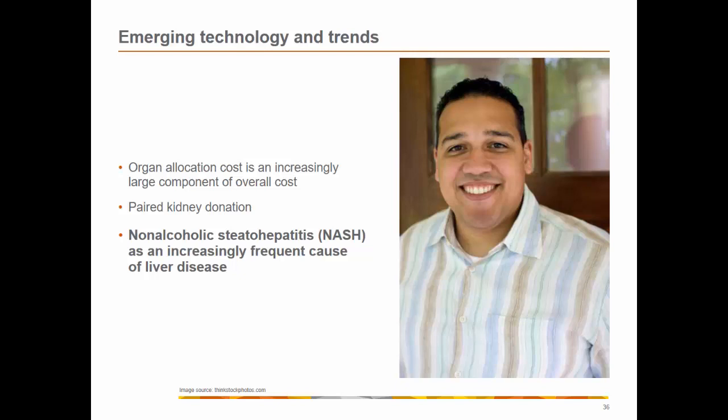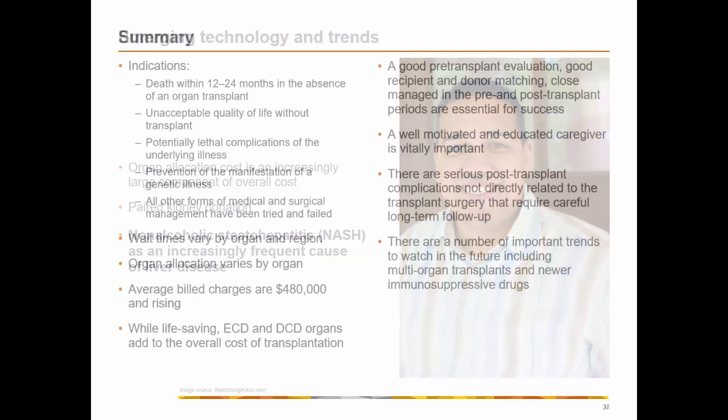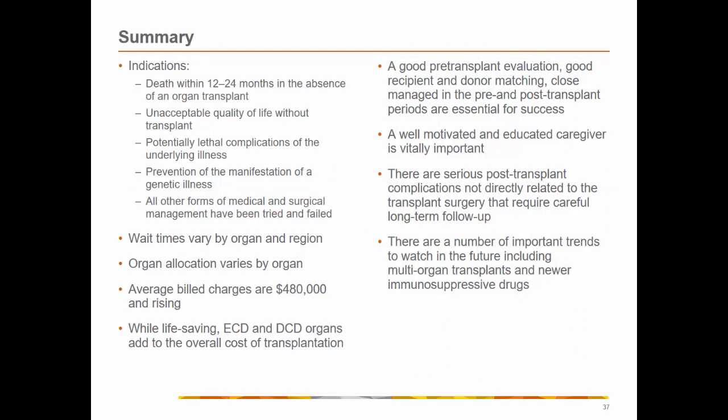In what's now emerging, organ allocation cost is increasingly large, paired kidney donation and non-alcoholic steatohepatitis are an increased frequency of causes of liver disease. Here is a summary of the indications for general transplantation: death must be imminent within 12 to 24 months, unacceptable quality of life without transplant, potential lethal complications of underlying diseases — and everything we have covered in this presentation.